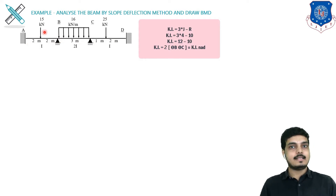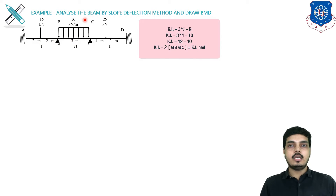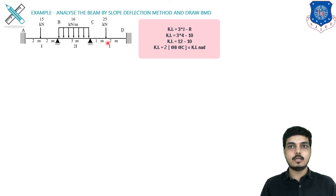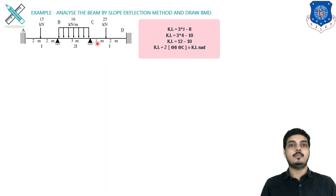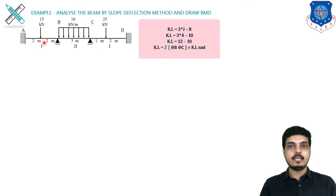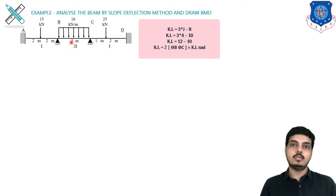On the AB span, there is a central point load of 15 kN at 2 m distance apart. On the BC span, there is a UDL of 16 kN/m over 3 m. For the CD span, note that a 25 kN load is given but not at the center — it is eccentrically placed — so we must use the eccentric load formulas for FEM. Also note: AB span has EI = i, BC span has EI = 2i, and CD span has EI = i.